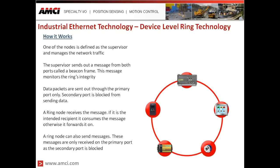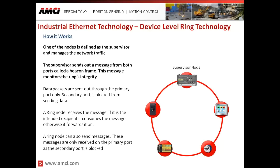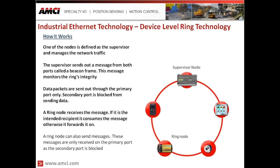So exactly how does it work? One of the nodes is defined as the supervisor, which manages the network traffic — oftentimes this will be a PLC. The supervisor sends out a message from both ports called a beacon frame, whose only intent is to monitor the ring's integrity. There are two ports in the supervisor: a primary port and a secondary port. Data packets are sent out through the primary port only; the secondary port is blocked from sending data, so we don't have data being sent in both directions creating network traffic. A ring node receives the message — if it's the intended recipient, it consumes it; otherwise, it forwards it on. Ring nodes can also send messages, which are only received on the primary port of the supervisor, as the secondary port is blocked from receiving data packets.